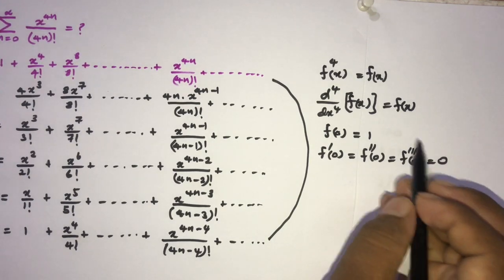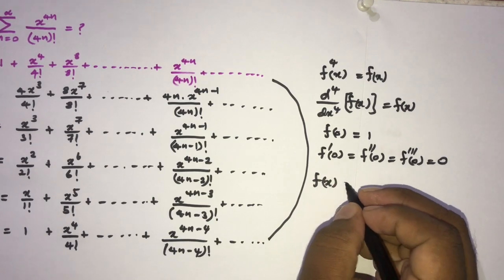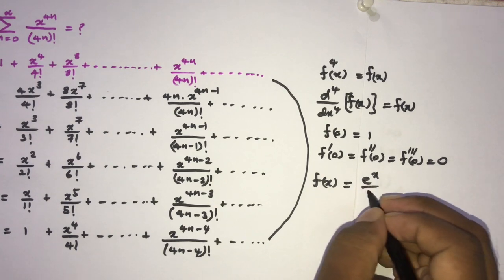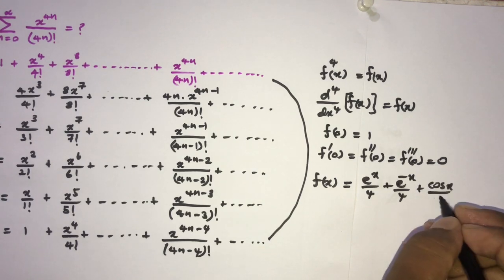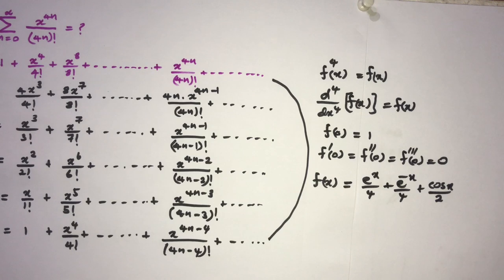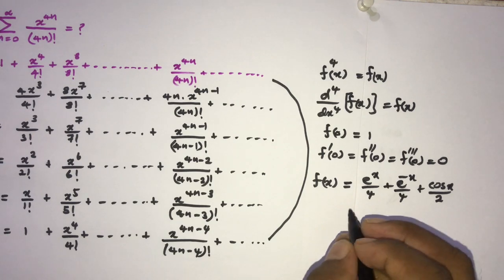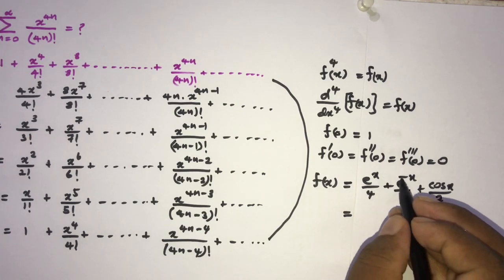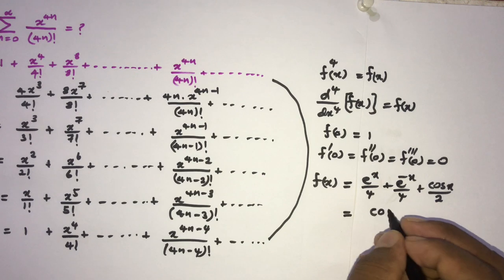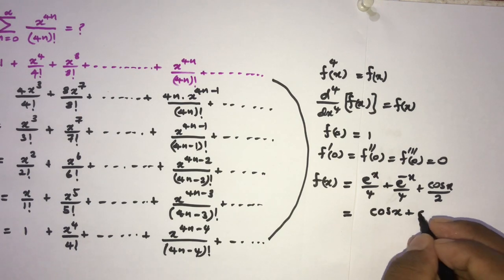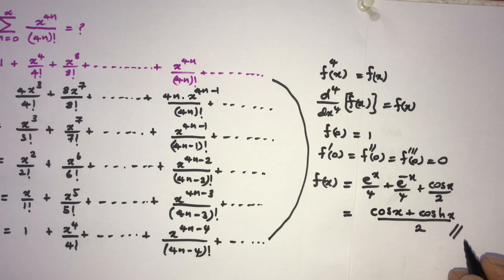Now we can solve this differential equation. Solving it, we get f of x equals e to the x over 4, plus e to the minus x over 4, plus cosine of x, all over 2. We can simplify: e to the x plus e to the minus x over 2 is the hyperbolic cosine function, so this equals cosine of x plus hyperbolic cosine of x, all over 2. This is the answer.